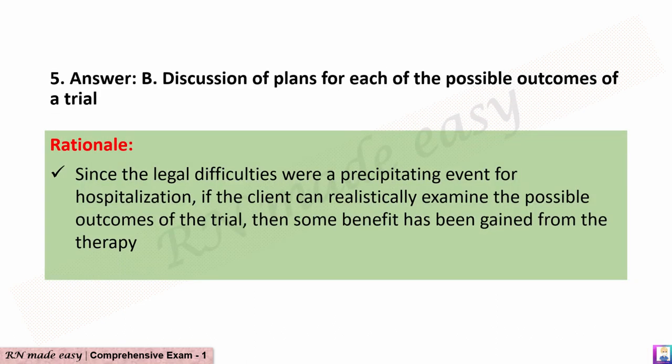The correct answer is B: Discussion of plans for each of the possible outcomes of a trial. Rationale: Since the legal difficulties were a precipitating event for hospitalization, if the client can realistically examine the possible outcomes of the trial, then some benefit has been gained from the therapy.